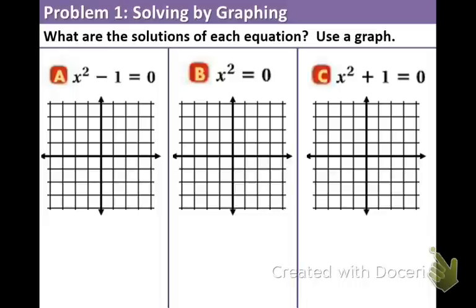So first, let's graph. The axis of symmetry for all three of these functions is x equals zero. The reason why, you can look at all three equations, the b value is not there at all. The b value is zero. So when you plug in zero for the negative b over two a,